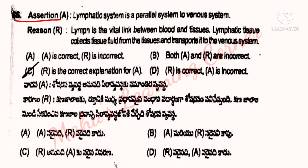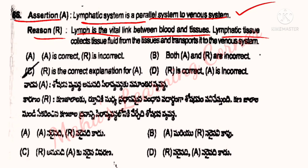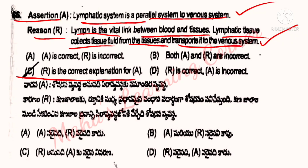Next, assertion A: Lymphatic system is a parallel system to the venous system — correct. Reason R: Lymph is the vital link between blood and tissues. Lymphatic tissue collects tissue fluid from the tissues and transports it to the venous system — correct. Option C: R is the correct explanation for A. Option C is the correct answer.